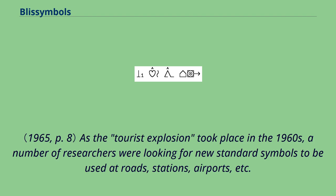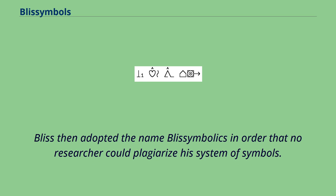As the tourist explosion took place in the 1960s, a number of researchers were looking for new standard symbols to be used at roads, stations, airports, etc. Bliss then adopted the name Bliss Symbolics in order that no researcher could plagiarize his system of symbols.